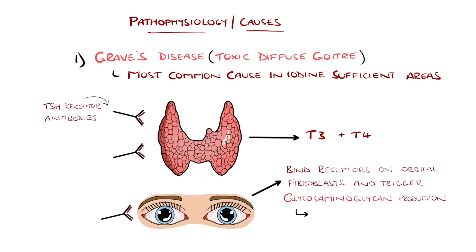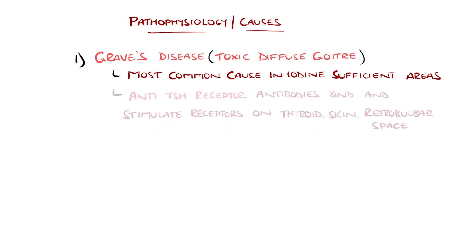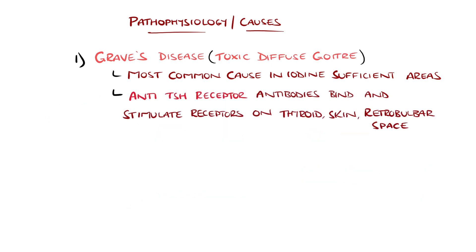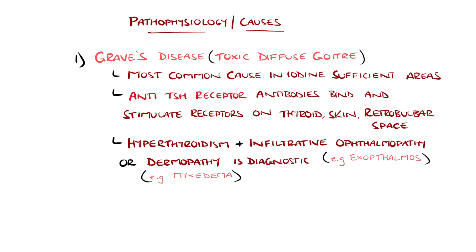Activation of orbital fibroblasts leads to production of glycosaminoglycans, which can trigger fluid accumulation and fat expansion, giving the classic ophthalmopathy seen in Graves' disease. This is termed infiltrative ophthalmopathy, and presence of hyperthyroidism alongside this, or infiltrative dermopathy like myxedema, is enough to diagnose Graves' disease.